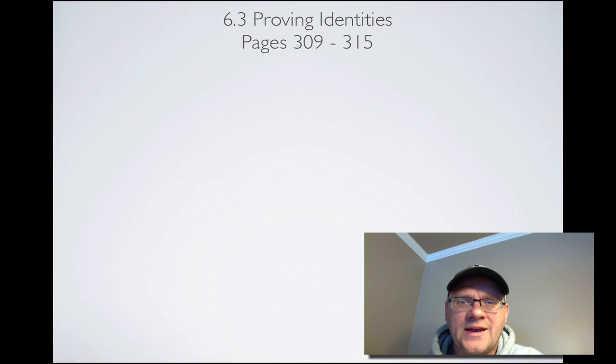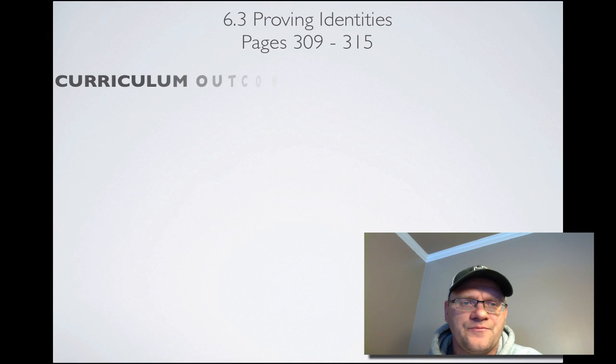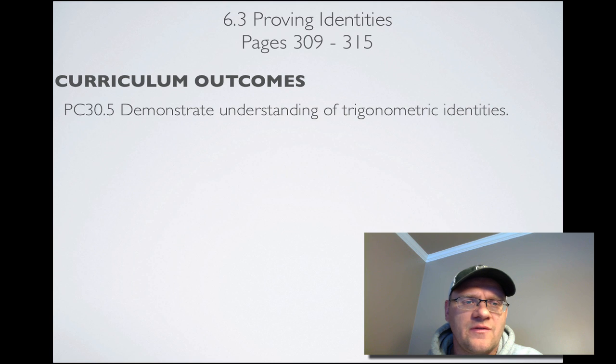Section 6.3, Proving Identities, is on pages 309 to 315. Our curriculum outcome is the same as usual — it's 30.5: demonstrate understanding of trigonometric identities.